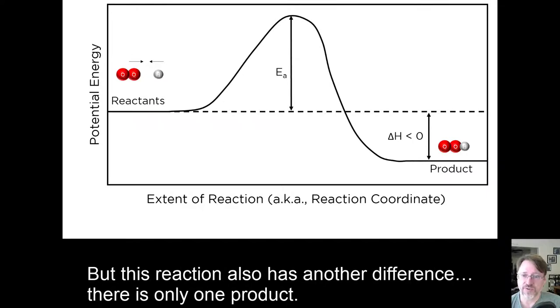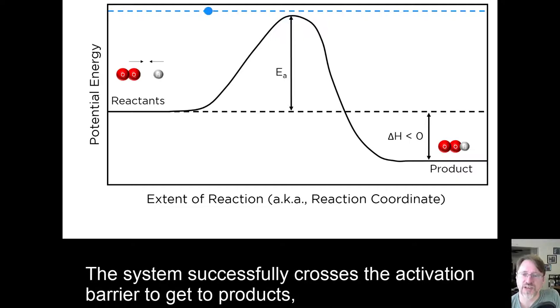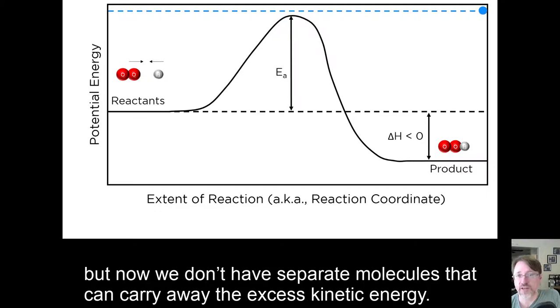But this reaction also has another difference. There is only one product. So let's trace the energy of a successful reaction like we did in the previous case. The system successfully crosses the activation barrier to get to products. But now we don't have separate molecules that can carry away the excess kinetic energy.